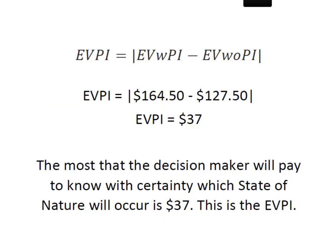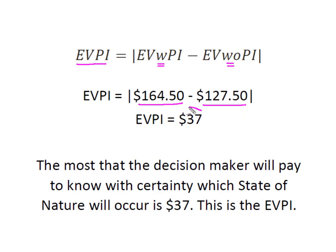Now I need to find the absolute value of the difference between my expected value with and without perfect information — that gives me EVPI. When I knew which state of nature was going to occur, the sum of those weighted payoffs was $164.50. When I didn't know which state of nature would occur, my highest expected value was $127.50. So the difference between my expected value with the information and without the information is $37.00. That is the most that I will pay to know with certainty which state of nature will occur in the future — this is the EVPI, or expected value of perfect information.